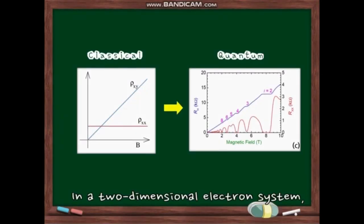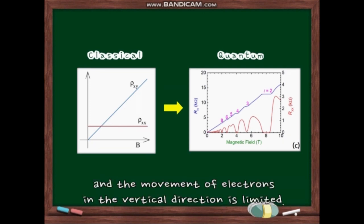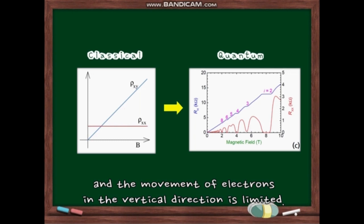In a two-dimensional electron system, electrons can move only to the interface under a magnetic field, and the movement of electrons in the particular direction is limited. As a result, the resistivity is quantized as follows.